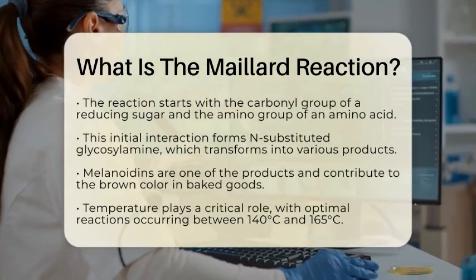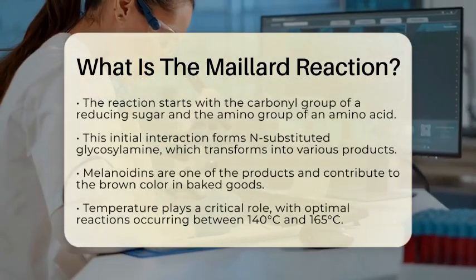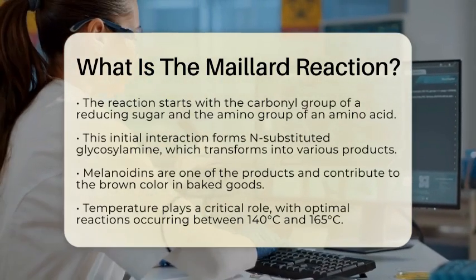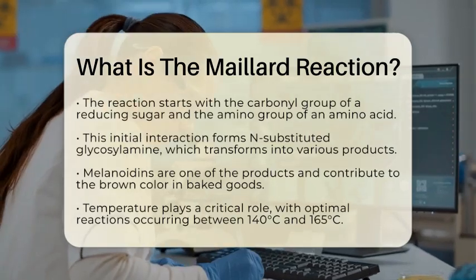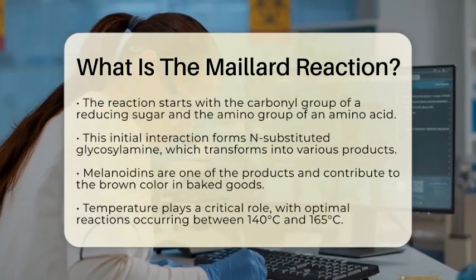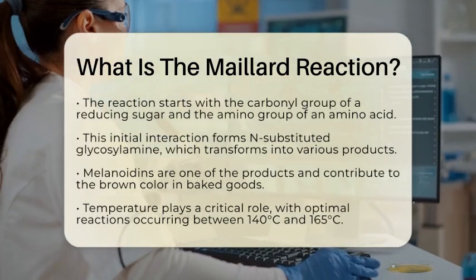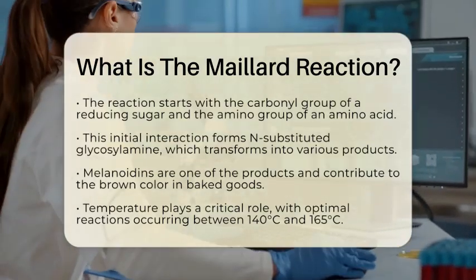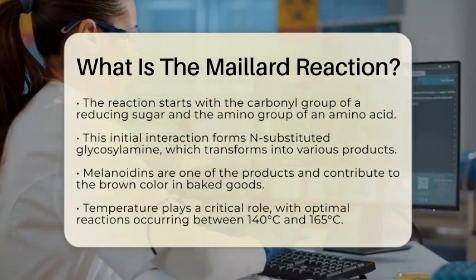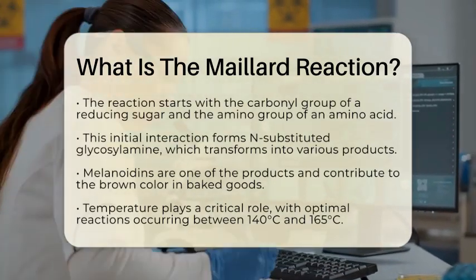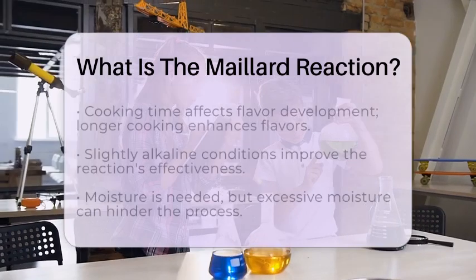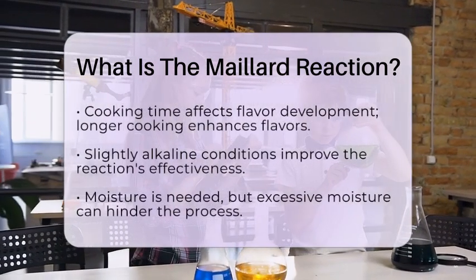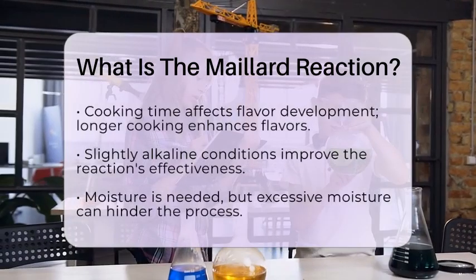Several factors can influence how the Maillard reaction unfolds. Temperature is one of the most important — the reaction occurs best between 140 degrees Celsius and 165 degrees Celsius. Going higher may speed up the reaction but risks creating unwanted flavors. Time also plays a role; the longer you cook, the more flavors develop.